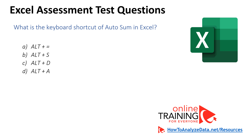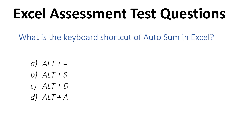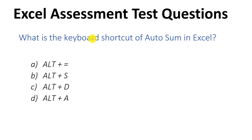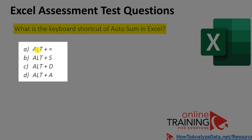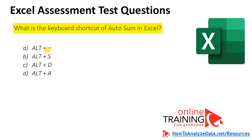During Excel assessment tests, you will often be tested on keyboard shortcuts. In this question, you're asked: what is the keyboard shortcut for AutoSum in Excel? There are four choices: Alt-Equal, Alt-S, Alt-D, and Alt-A. Keep in mind that the plus sign in these shortcuts just indicates two keys — Alt and another key, such as the equal sign or capital S. What do you think is the right answer?